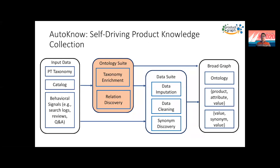Here is the architecture of the self-driving collection. Besides the input data and output, we have two suites. The ontology suite has taxonomy enrichment and relation discovery: taxonomy enrichment means finding new concepts and new attributes, and relation discovery associates them with the existing taxonomy. We also have the data suite, which includes data imputation — extracting values from titles and queries — data cleaning, and synonym discovery to find synonym attribute values.